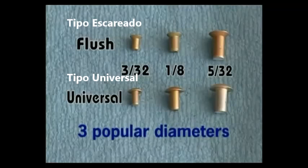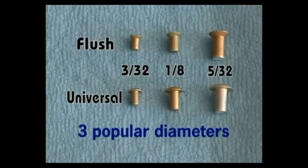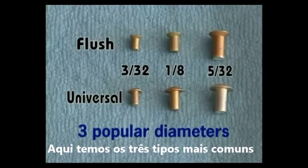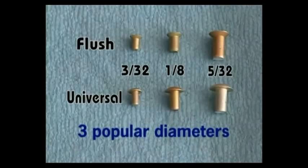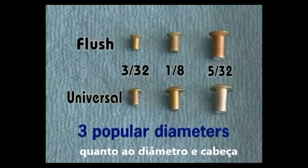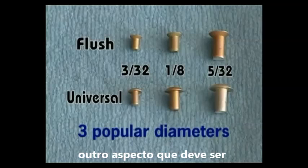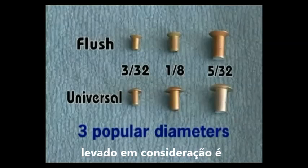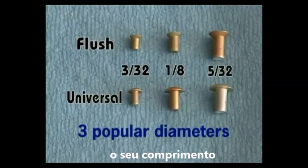These three sizes of each style reflect the most common diameters you will use in an RV kit. These three diameters determine the size of the hole that needs to be drilled. The other important aspect of a rivet is its length — a rivet can have a wide range of possible lengths for each of these diameters.